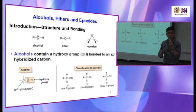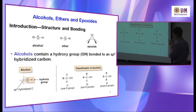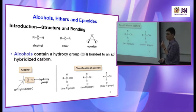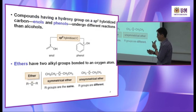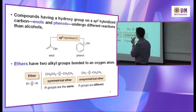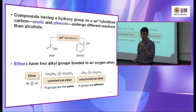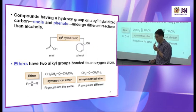Classification of alcohol is similar to alkyl halide. You classify it into primary alcohol — attached to one R group with two H — secondary alcohol attached to two R groups and one H, or tertiary alcohol attached to three R groups. Compounds having a hydroxyl group on an sp2-hybridized carbon are called enol or phenol. Phenol, attached to a benzene ring, undergoes different reactions than alcohol and has different chemical properties, which we will study in second year.